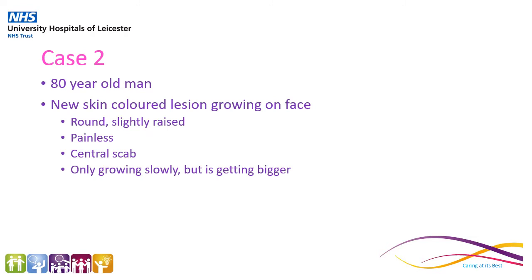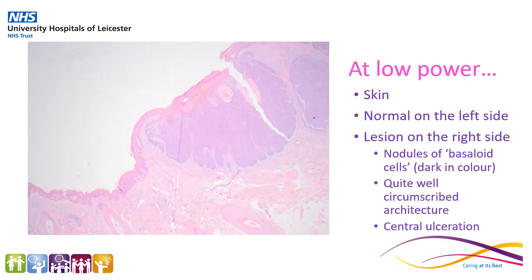The next case is an 80-year-old man with a new skin-coloured lesion growing on his face. This lesion is round and slightly raised. It's painless and it has a central scab. The lesion is growing slowly, but it is getting bigger. This man has had an excision of the lesion, and here we have a picture of it at low power. This is a section of skin, and on the left-hand side we've got the normal skin with hair follicles present, and on the right-hand side we've got our lesion.